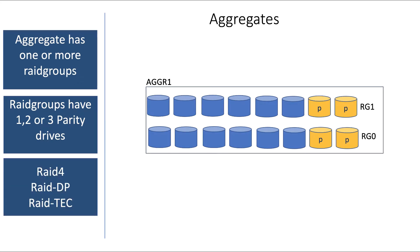One parity disk per RAID group is referred to as RAID 4. Two parity disks per RAID group is referred to as RAID DP or dual parity. And three disks per RAID group is referred to as RAID Tech, which stands for triple erasure coding. The number of parity drives is determined when you create the aggregate.